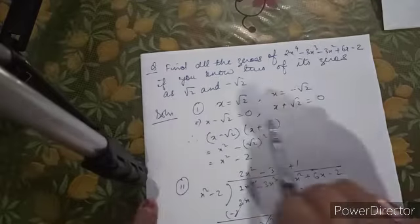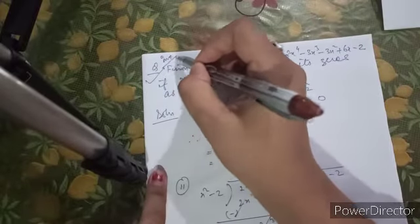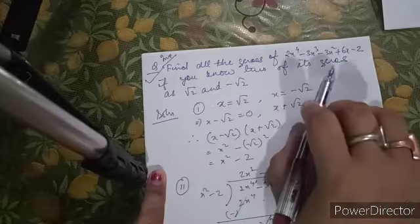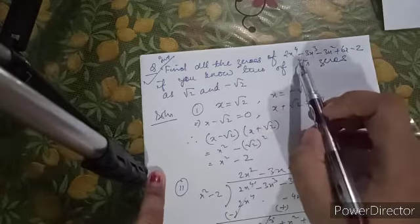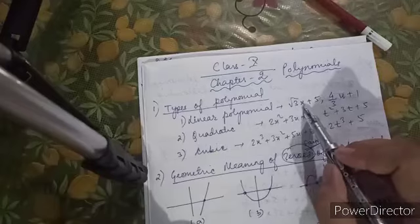Here is another important question: find all the zeros of this polynomial if you know two of its zeros are √2 and -√2. As I have already told, depending on the highest degree, there are that many zeros.